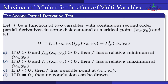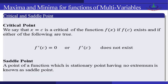Dear students, now we define critical and saddle points. A critical point: x = c is a critical point for f(x) if f(c) exists and either f′(c) = 0, or f′(c) does not exist (i.e., f′(c) = ±∞). A saddle point is a stationary point of a function that has no extremum value.